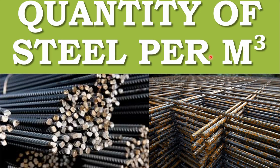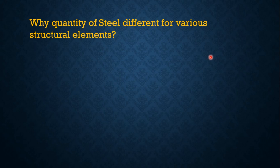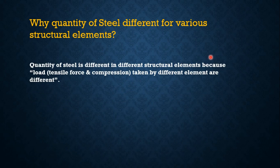Hey guys, in this video we will see how much quantity of steel is required per meter cube for different structural elements. Why is the quantity of steel different for various elements? It's because the load taken by different structural elements is different. For example, the load on a beam is slightly greater than the load on a slab, so the steel quantity in a beam is slightly more than in a slab, and likewise for other structural elements.